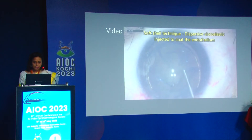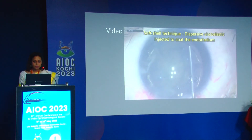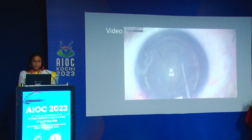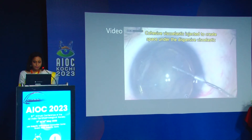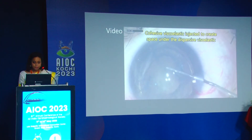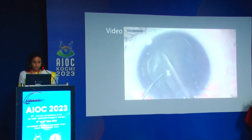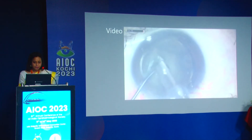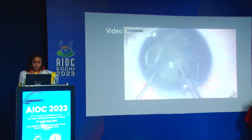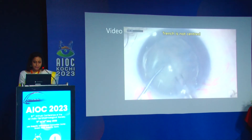A very critical step is the soft shell technique: first use dispersive viscoelastic to coat the endothelium, followed by cohesive viscoelastic underneath the dispersive viscoelastic. It is also important to use BSS containing oxidized glutathione, which is endothelial protective.